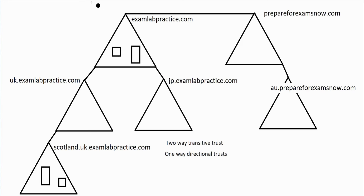There is also something called a shortcut trust. A shortcut trust is used when you have two domains that already have transitive trust, but communication is being slowed down because of how the trust relationships are chained. Let me give you an example.